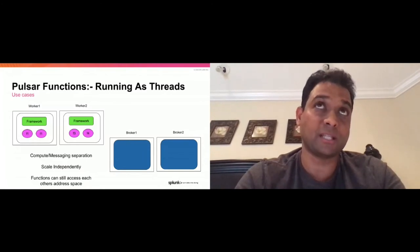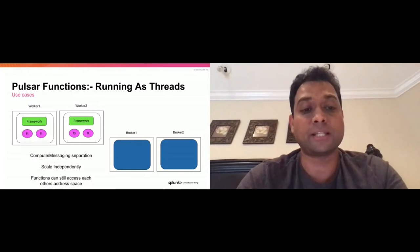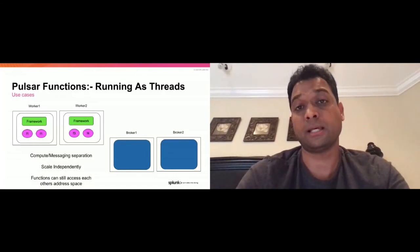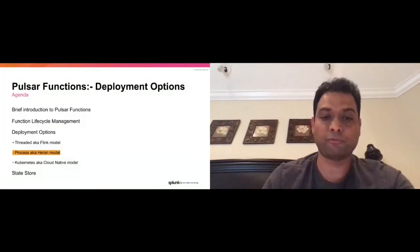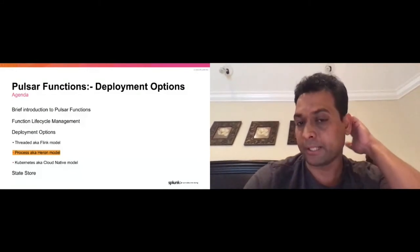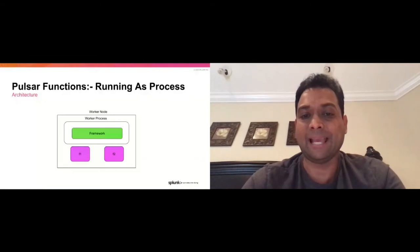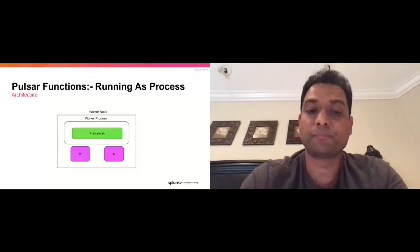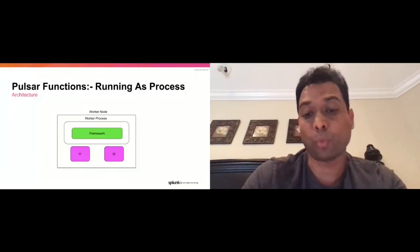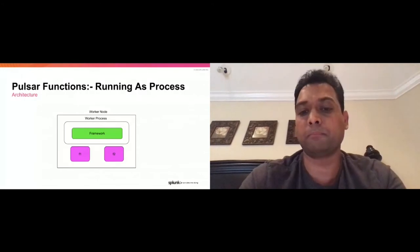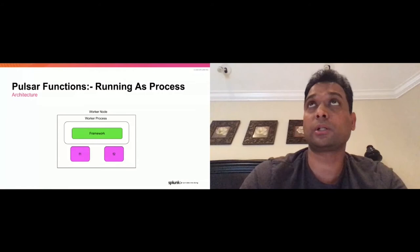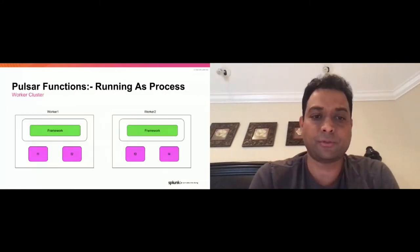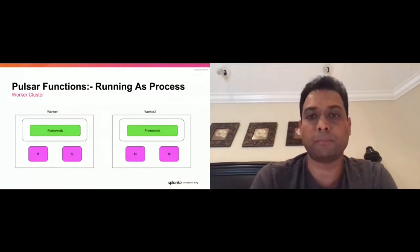We can also do processing as processes — run functions as processes. I call that the Heron model because at Heron at Twitter, we did essentially the same thing: converting all operators to run as separate processes to minimize the noisy neighbor issues that plagued many of our topologies. Inside a worker node, you have this worker process composed of framework things, but when functions are actually launched, they run as separate processes. F1 and F2 are two separate processes running alongside the worker process in this worker node.